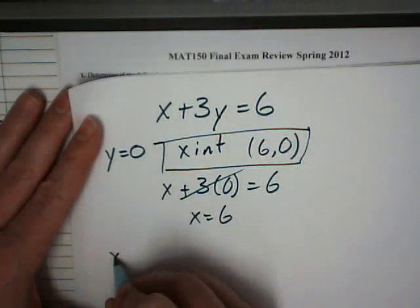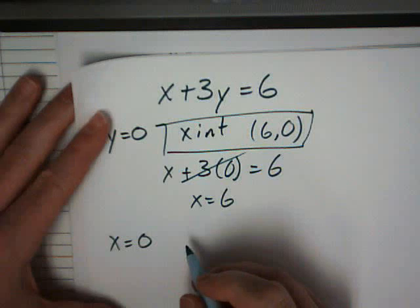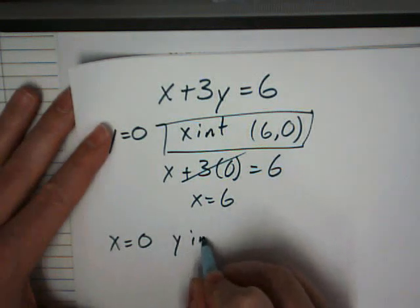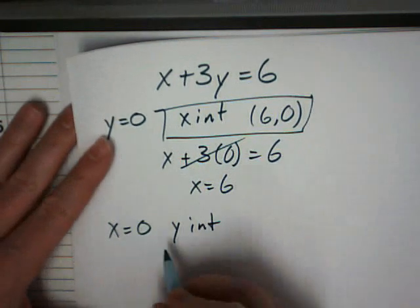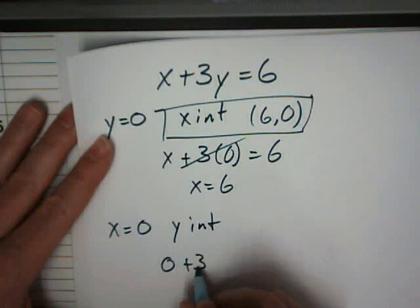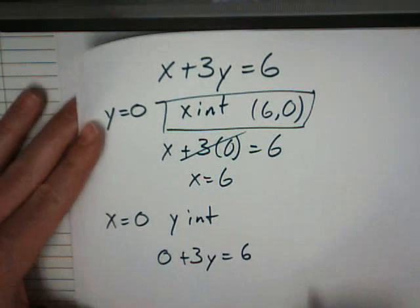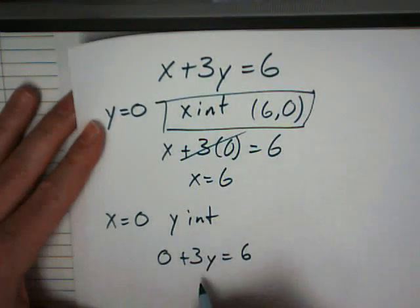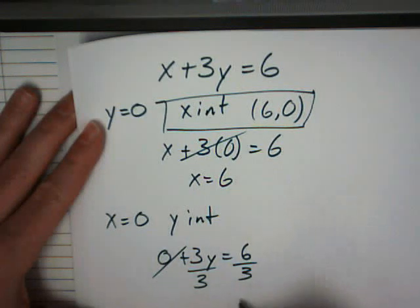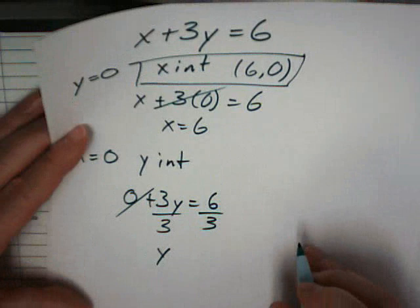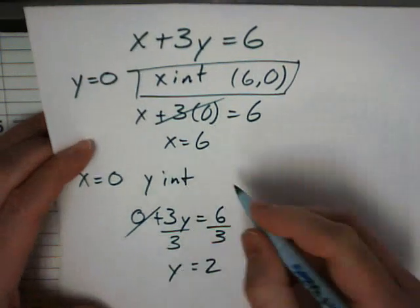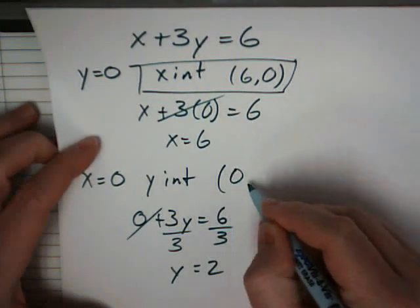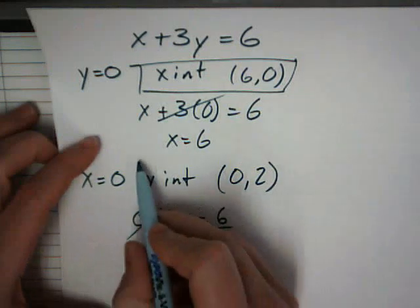And for the y-intercept, you do the opposite. You plug a 0 in for x to find the y-intercept. So, then 0 plus 3y equals 6. Just plugging it back into the original equation here. 0 is nothing. Divide by 3. y is equal to 2. So the point, the x value is 0. The y value is 2. And there's your y-intercept.